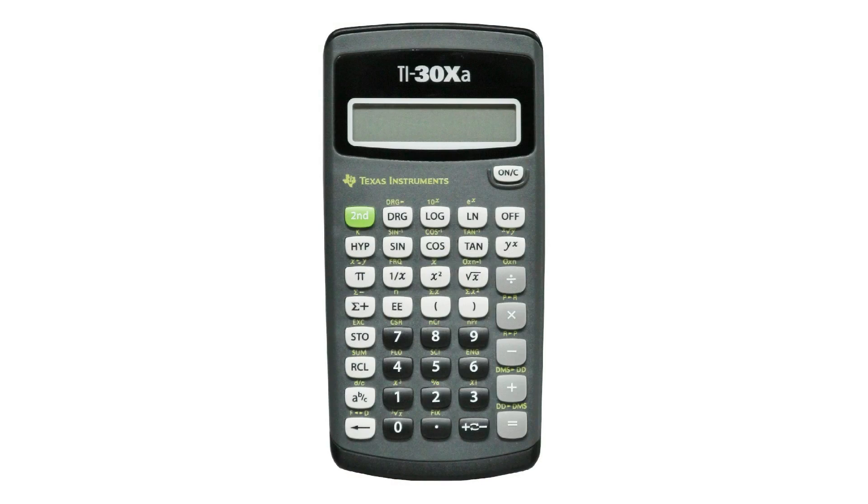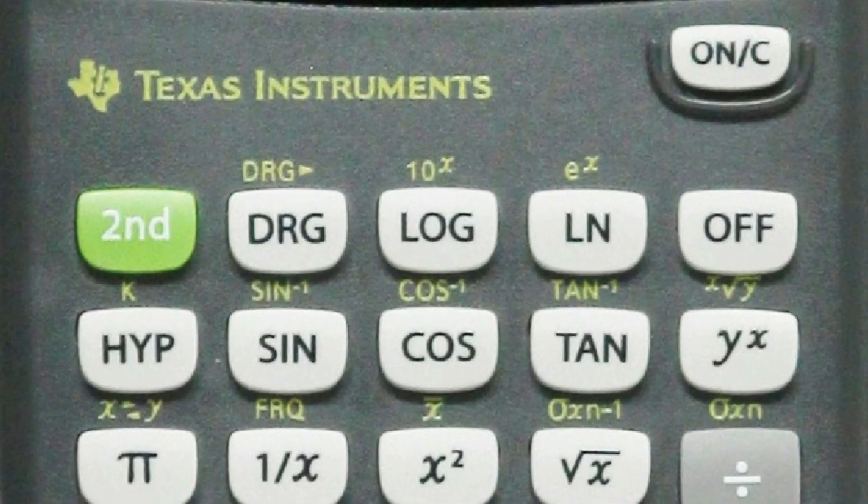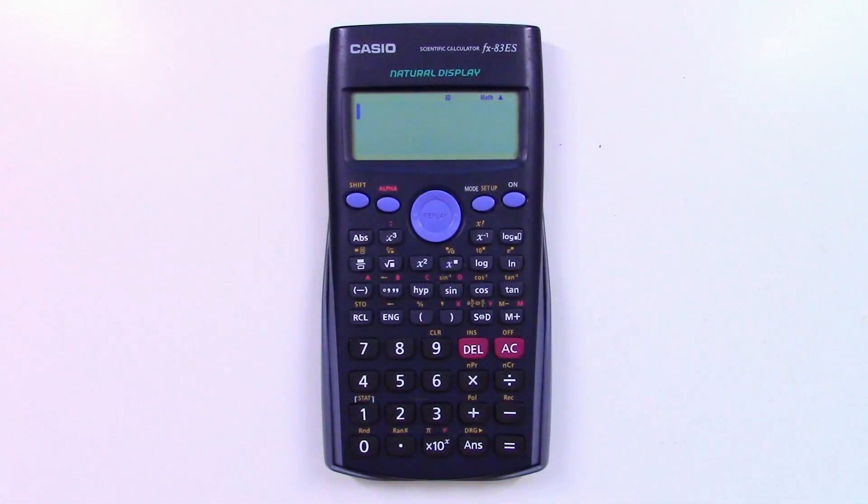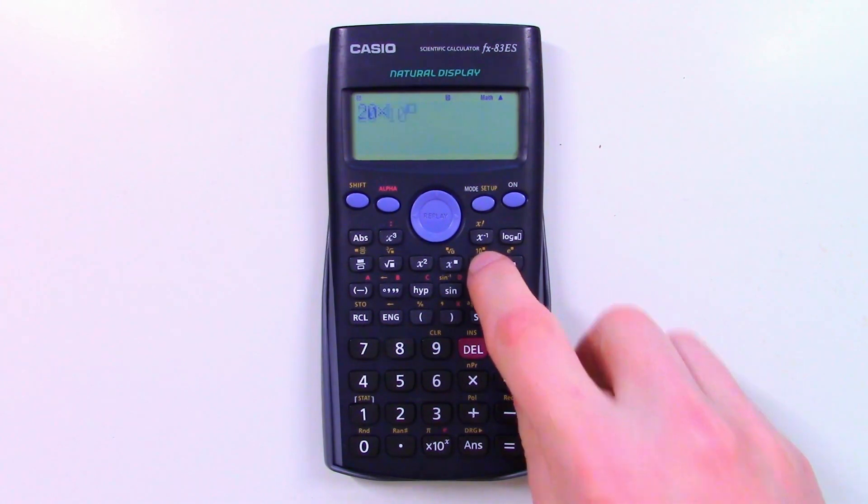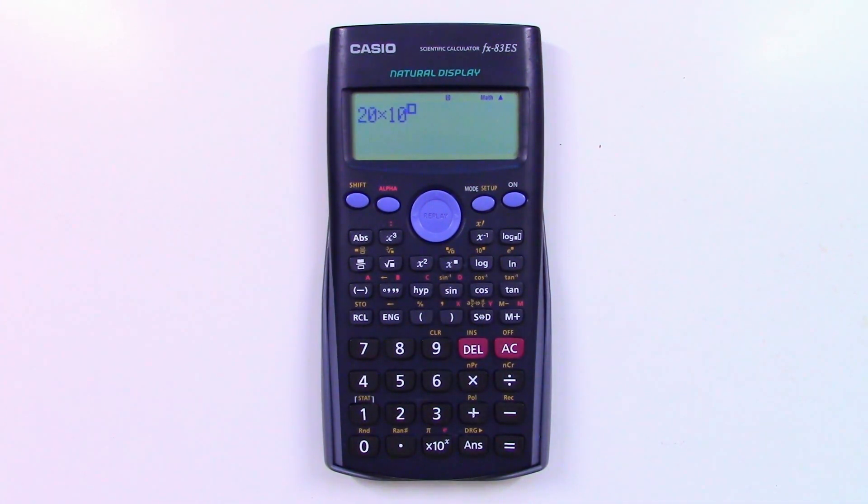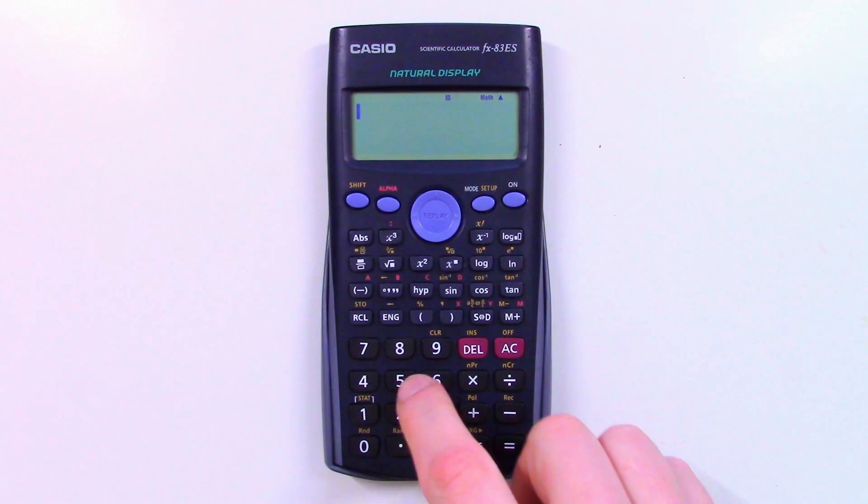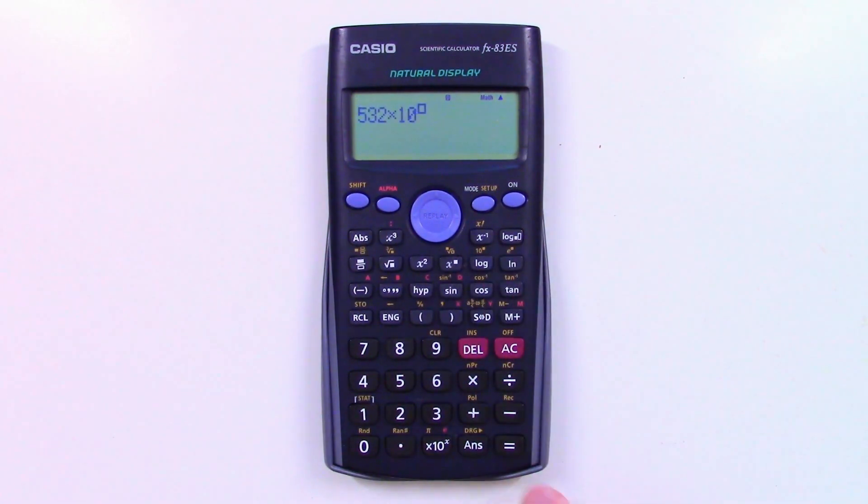On this Texas Instruments TI-30 calculator, it's right here. And pressing the second function button lets you access it. To type 20 kilometres, I type 20, as before, hit the multiply key, then press the alternate function key to access this function. As you can see, it's automatically typed the number 10 and raised it to a power. I just need to type my power in the box here. And when I hit equals, you can see it's worked out the answer. The process for typing 532 nanometres is pretty much the same. Again, this calculator isn't picky about which minus symbol I use. But give it a try on your own calculator to make sure. Different brands are likely to have different tolerances for errors which a user might make.